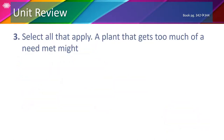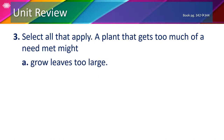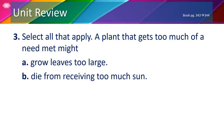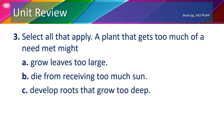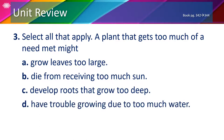In number 3, we're going to select all that apply. A plant that gets too much of a need met might: A. Grow leaves too large; B. Die from receiving too much sun; C. Develop roots that grow too deep; or D. Have trouble growing due to too much water. Remember that too much or too little of something a plant needs will harm it and affect its growth. So too much sun and too much water will both affect the plant badly.